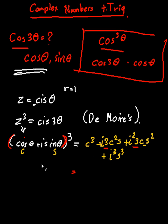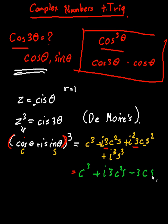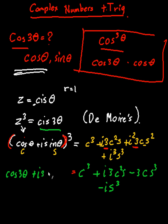Rewriting what I have: c³ plus i times 3c²s, then i² becomes −1 giving −3cs², and i³ becomes −i giving −is³. We know this is equal to cis 3θ, so I'll write it as cos 3θ plus i sin 3θ.